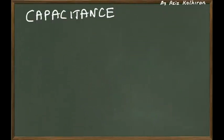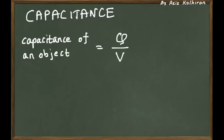Let me define what the capacitance is. The capacitance is defined by this ratio. The capacitance of a metal object — first of all, I have to clarify that the capacitance is only defined for metals. There is no capacitance for insulators. The capacitance of any metal object is defined by its total charge divided by its potential.